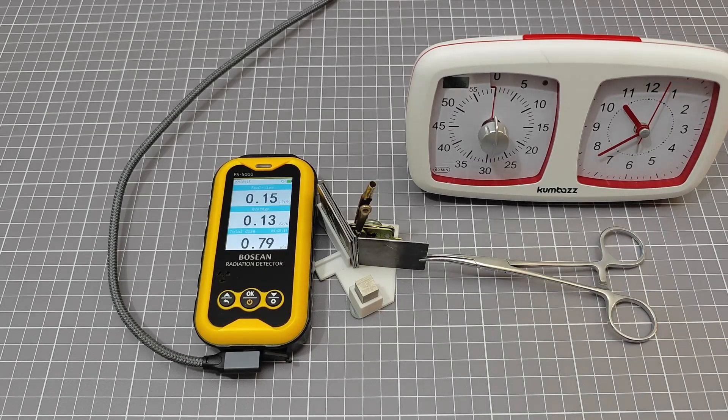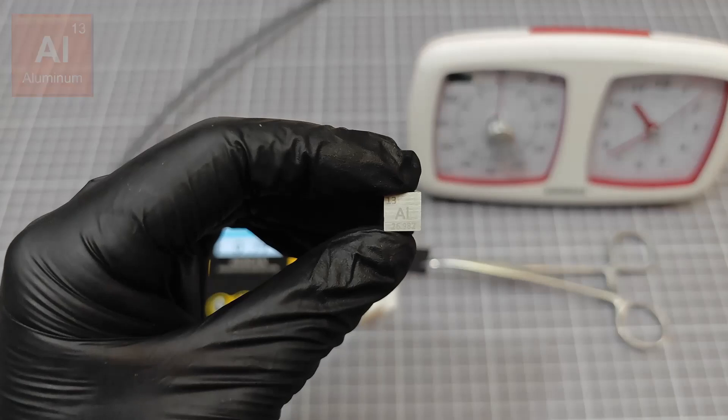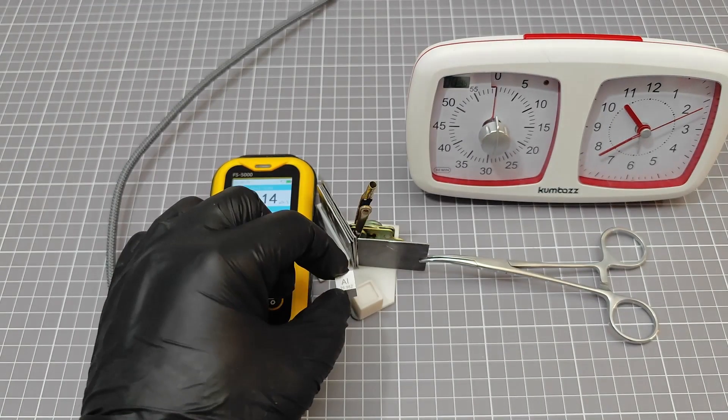Next up, aluminium with an atomic number of 13. As you can see, the source is covered with a strip of lead before changing the element specimen being tested.